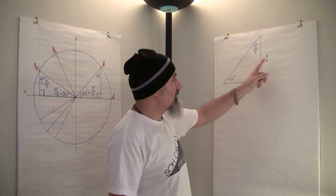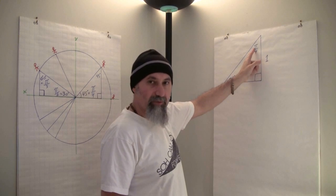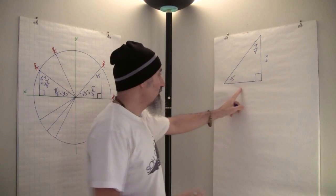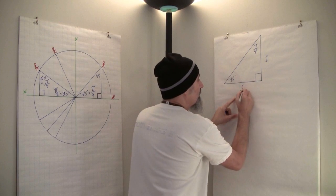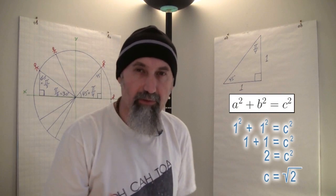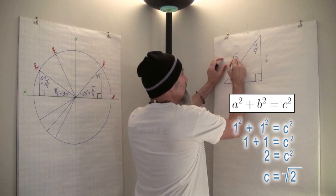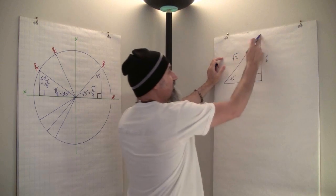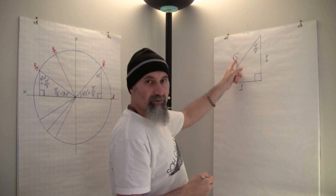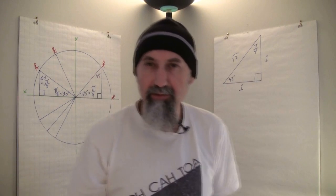Across from the smallest angle we set that side equal to one. That's 45 degrees, or pi over 4 radians. Since both base angles are 45 degrees, if this side is one, this side has to be one as well. Using the Pythagorean theorem — a squared plus b squared equals c squared — the hypotenuse becomes the square root of two. One could be any unit you want; the square root of two is just a number.